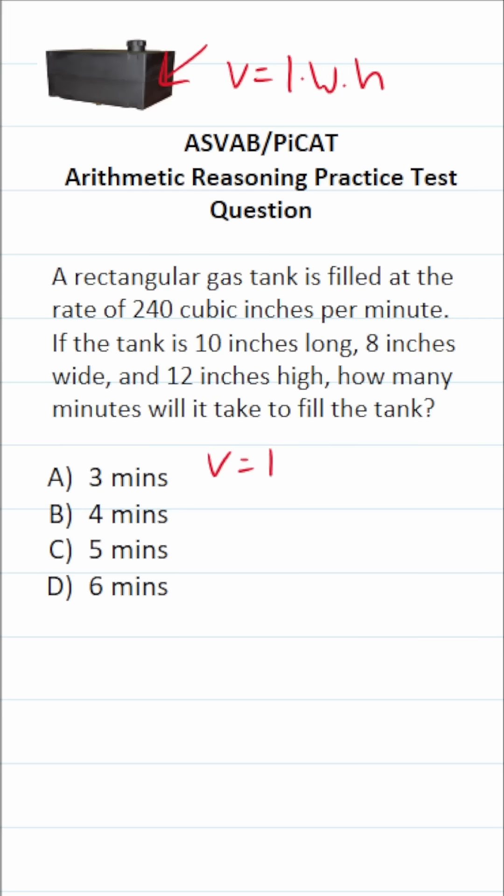Again, on the ASVAB and PiCAT, you're not given a reference sheet or a calculator. So you do have to commit some of these basic formulas, including how to find the volume of a prism, to memory at some point. So let's go ahead and find the volume of this rectangular gas tank.